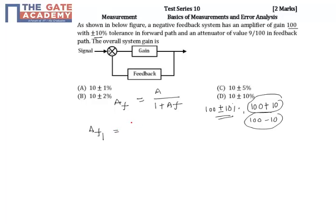First I will take this as A_f1. This is equal to 100 plus 10 percent, 10 percent means 0.1 times 100, which is 10, divided by 1 plus (100 plus 10) times 9 by 100. If you simplify this you will get 10.091. So the difference, delta A_f1, is 10.091 minus 10, which is 0.091 or 0.1.